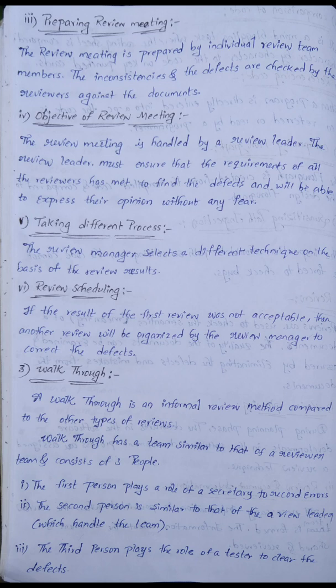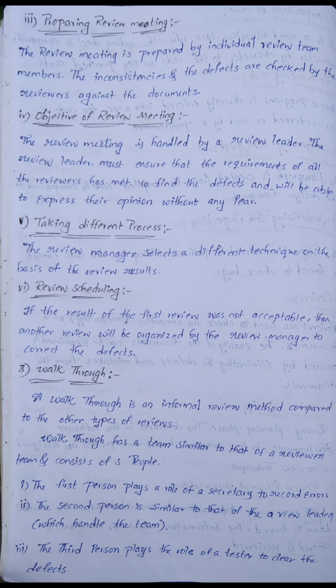Walk-through is an informal review method compared to other types of reviews. A walk-through team has three members: the first person plays the role of secretary to record findings, the second person is similar to the review leader, and the third person plays the role of tester to identify defects.